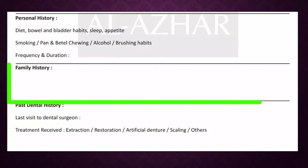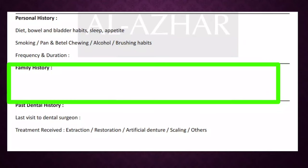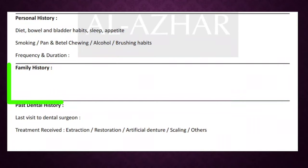Under family history, speak about the patient's parents' and maternal or paternal grandparents' medical history — since when they had the condition, and what medications they've been taking. Siblings' history may also be relevant in genetic conditions like amelogenesis imperfecta or dentinogenesis imperfecta, where you can mention if siblings have similar tooth discoloration.